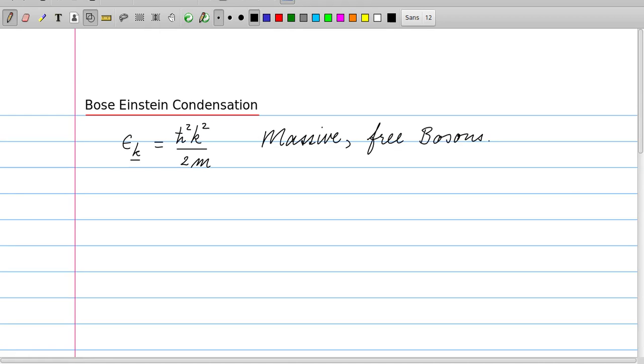This is a simple description. You can also add an external potential to it, but we will stick for now to this standard description of the Bose-Einstein condensation.